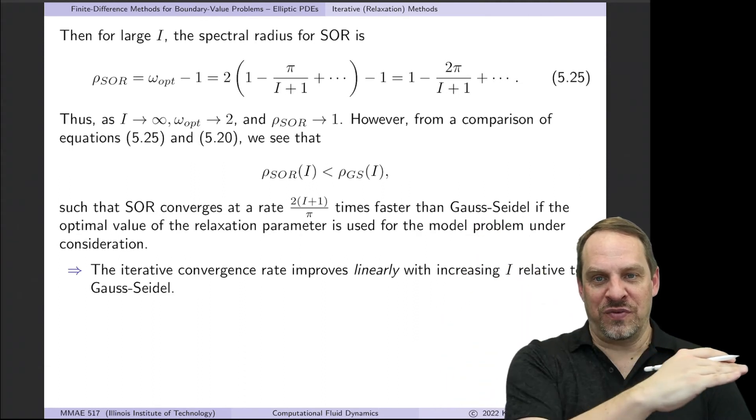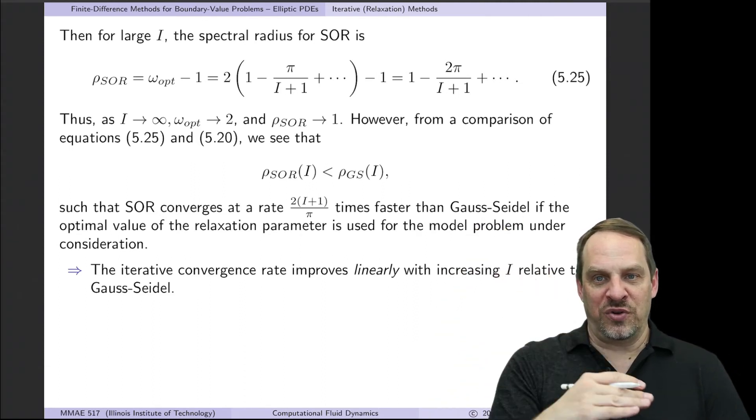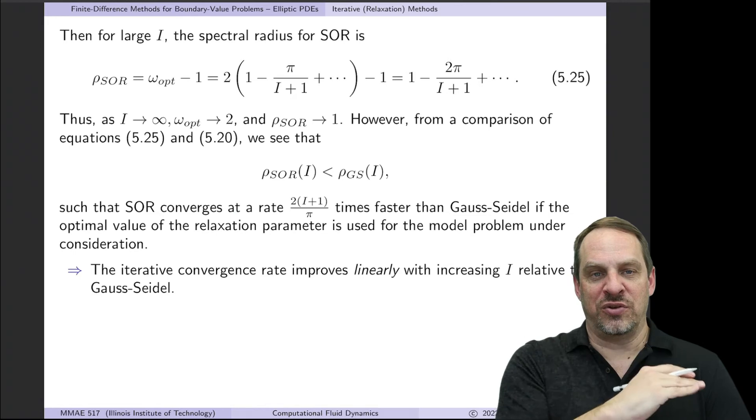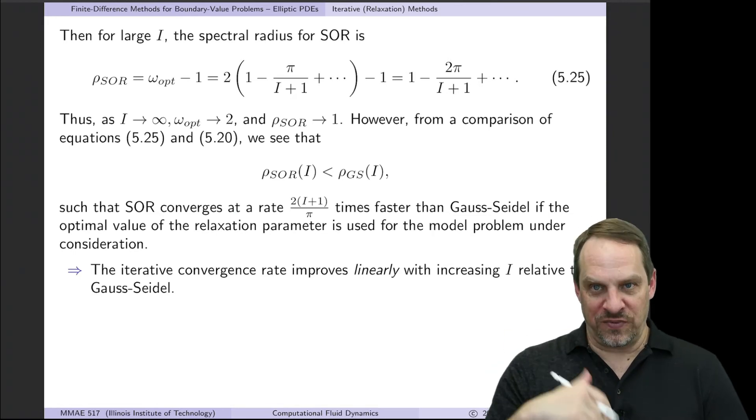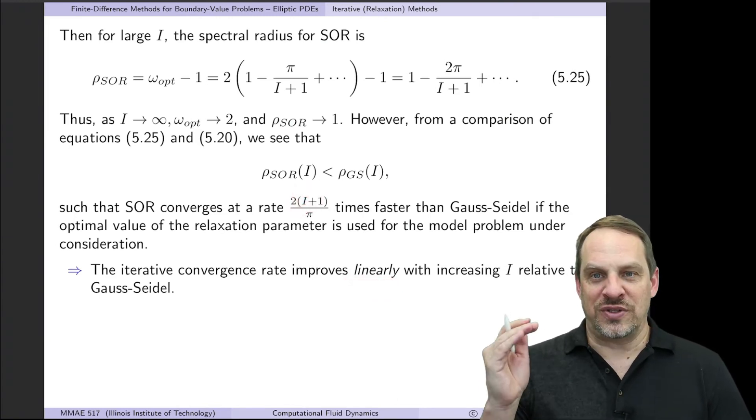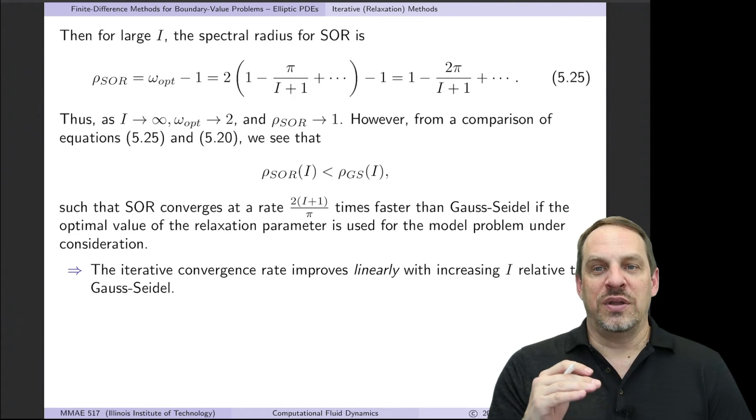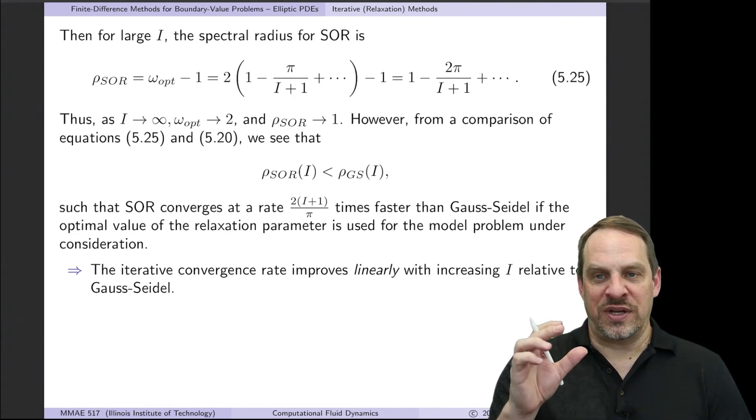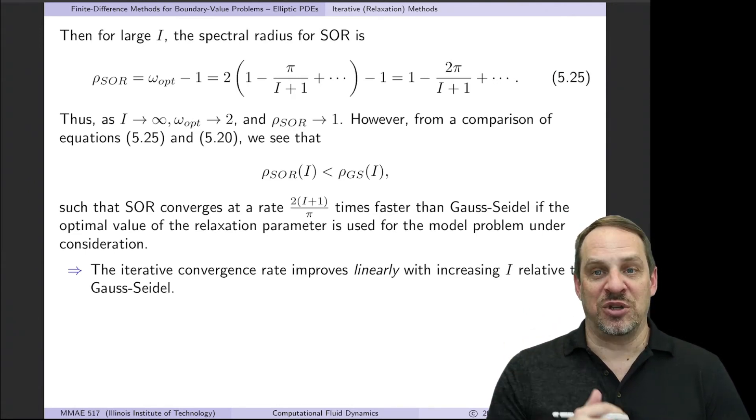However, the question is, at what rate? And what you'll see is, if you look back from the previous video, the spectral radius for SOR is always smaller than that for Gauss-Seidel, and it's smaller such that the rate is 2(I+1)/pi times faster than Gauss-Seidel. Gauss-Seidel will have an iterative convergence process, SOR will converge faster to the same level of iterative convergence as Gauss-Seidel in fewer iterations. The improvement is linear as compared to Gauss-Seidel. You see that here. So as I gets bigger, the improvement as compared to Gauss-Seidel gets better and better and better. It can be significantly faster than Gauss-Seidel.